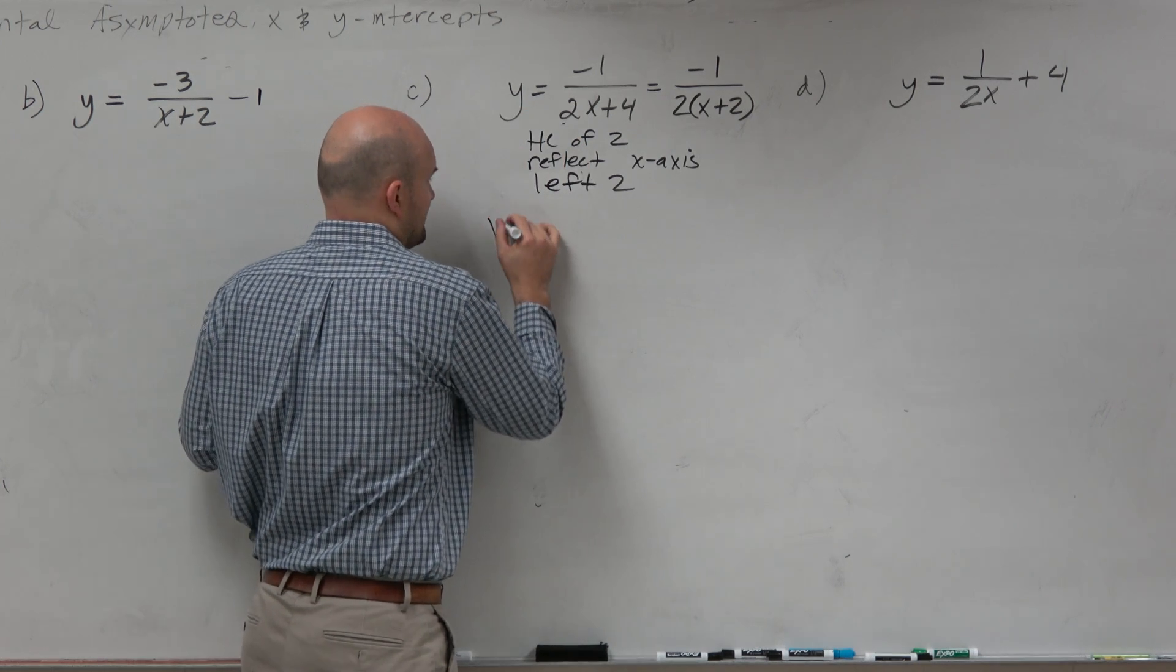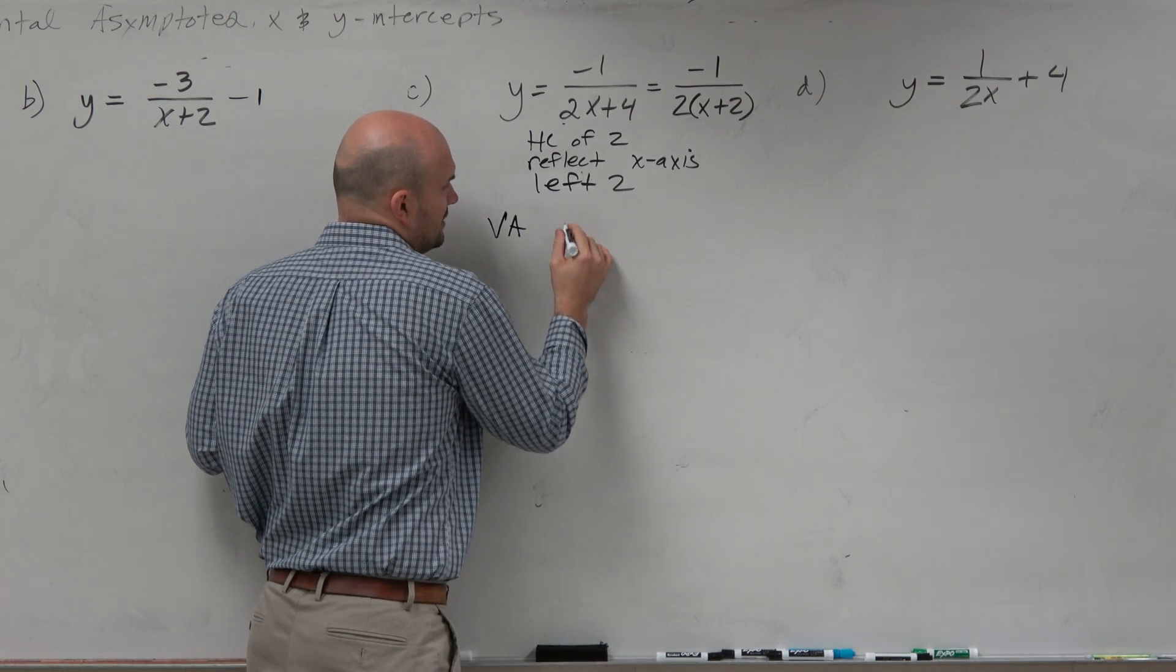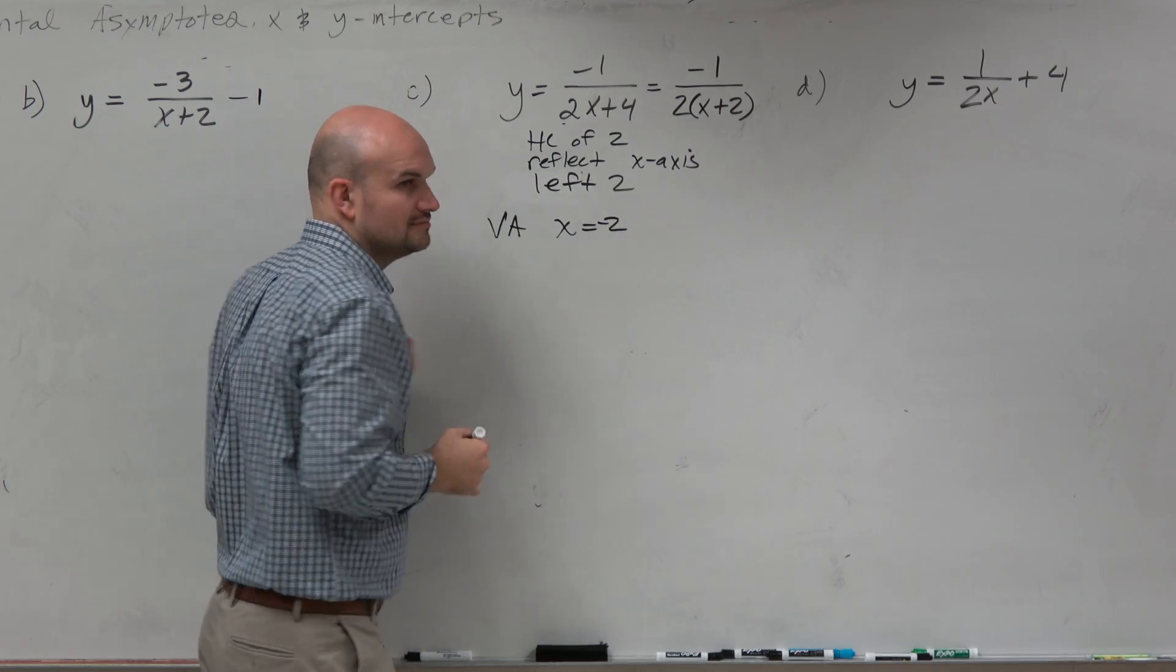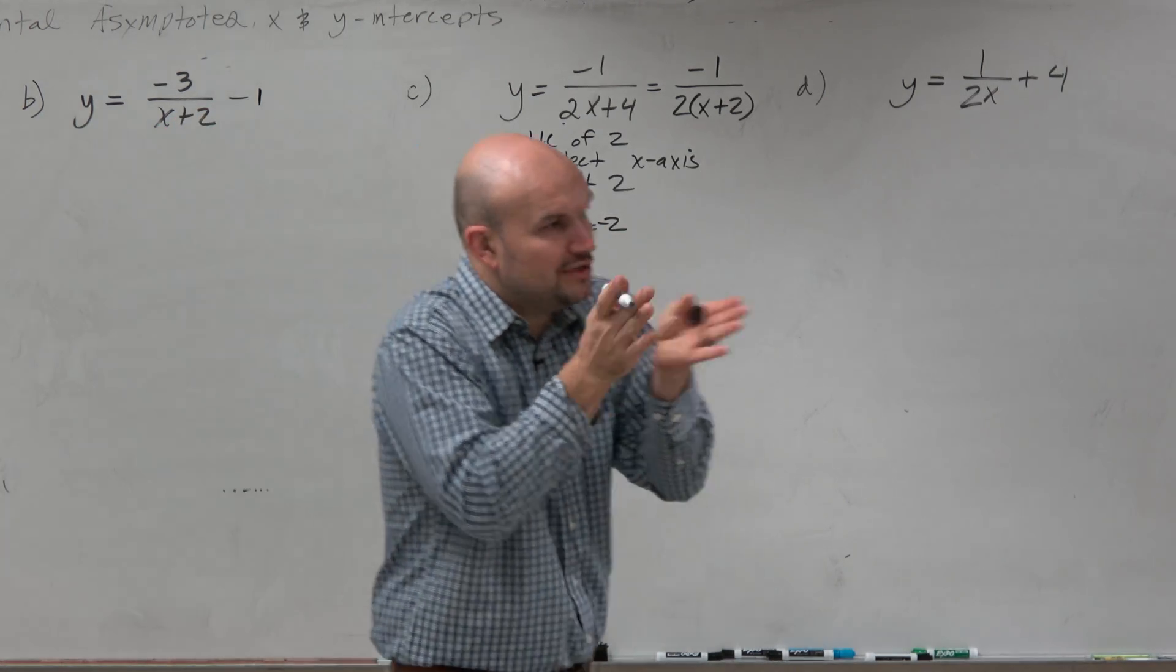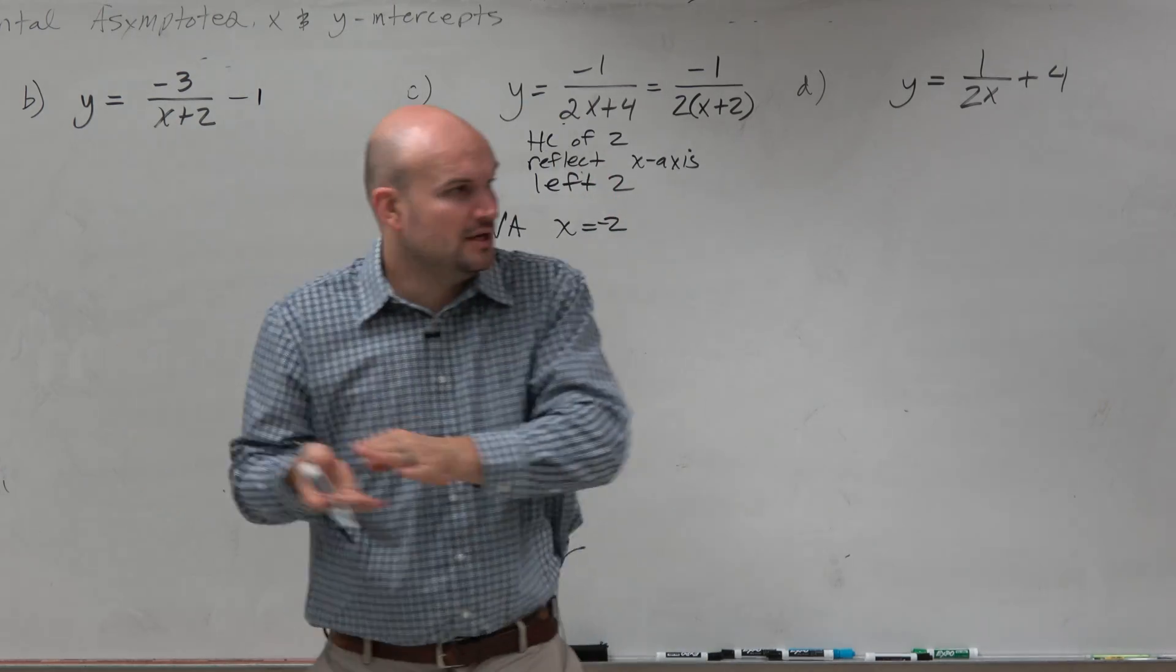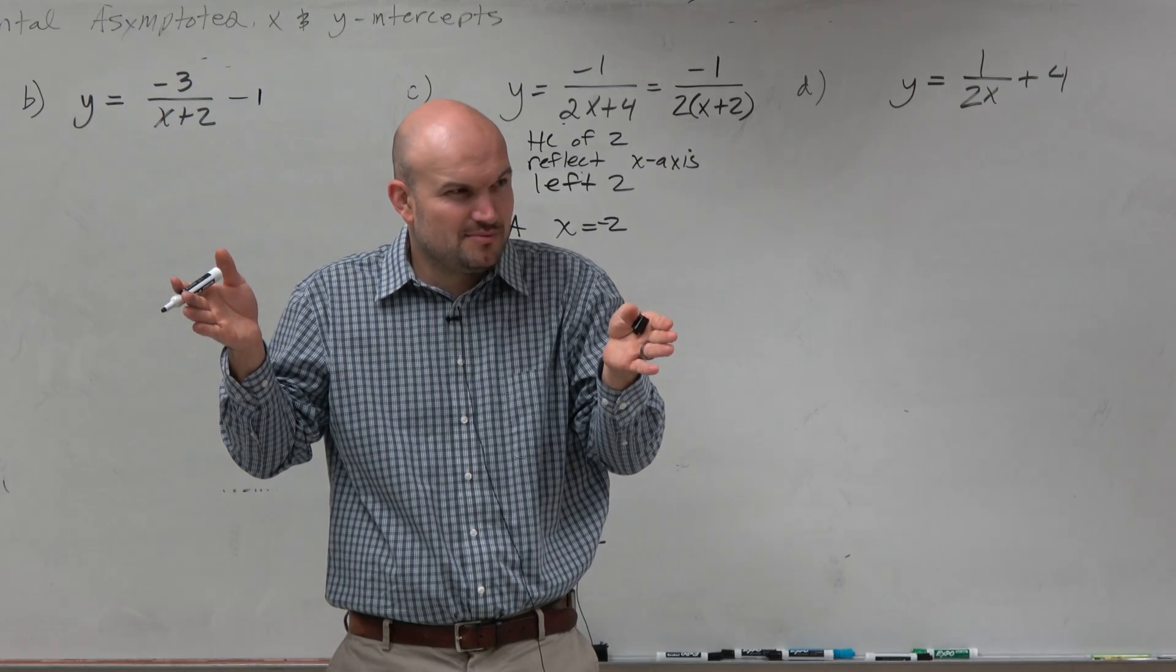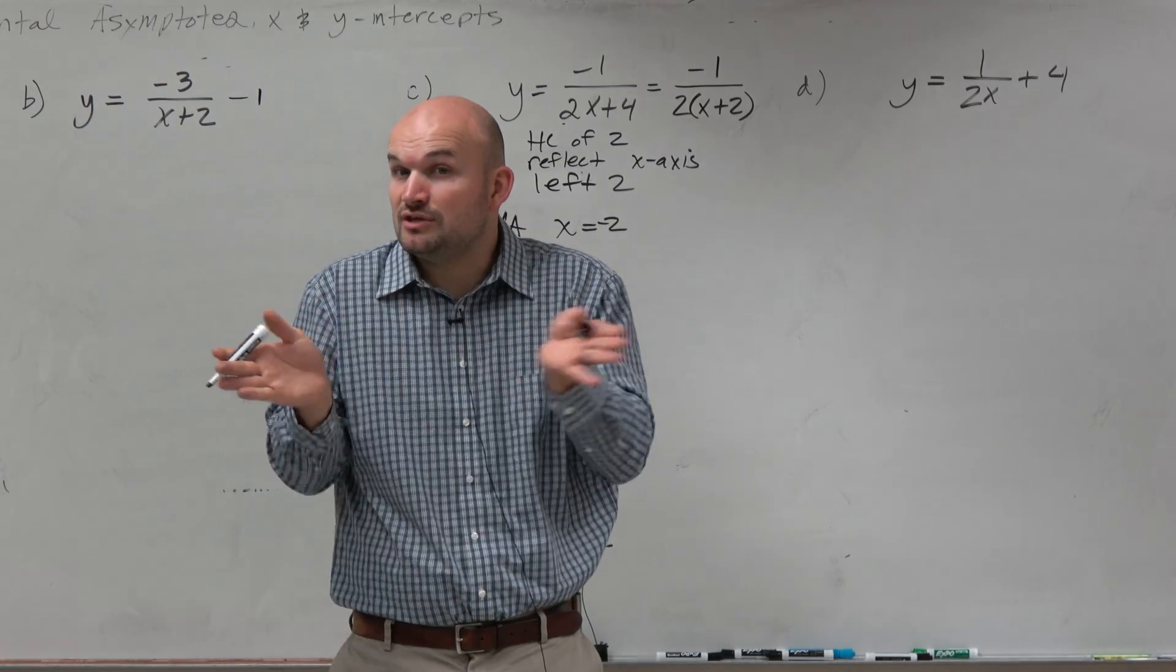So I can just say vertical asymptote is at x equals negative 2. You're going to the left, so if it's at 0 and you're shifting it 2 units to the left, you're going left 2. If I stretch, if I condense or compress, is that changing my asymptote? No, right? It's only the shifting.